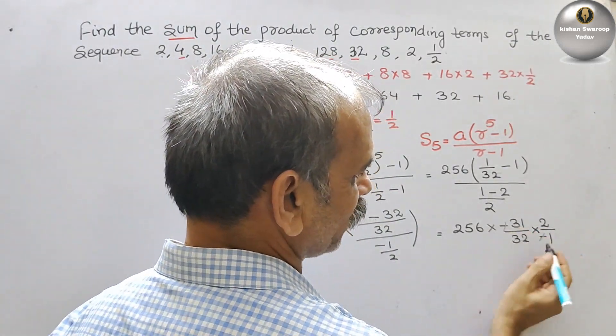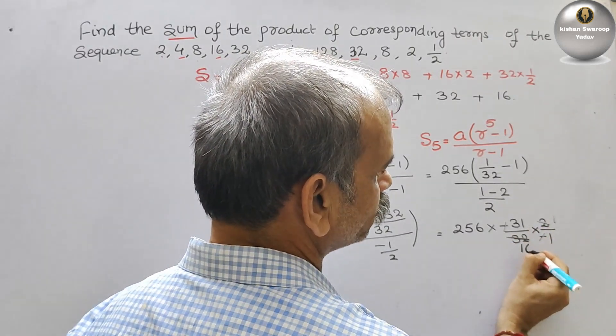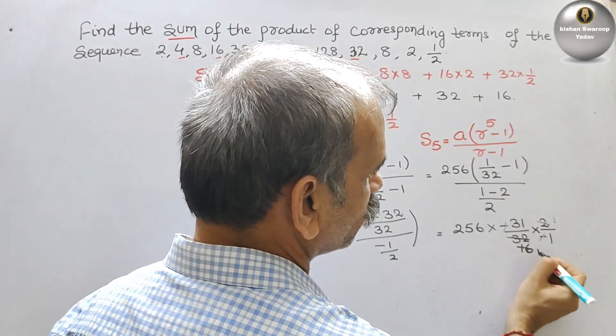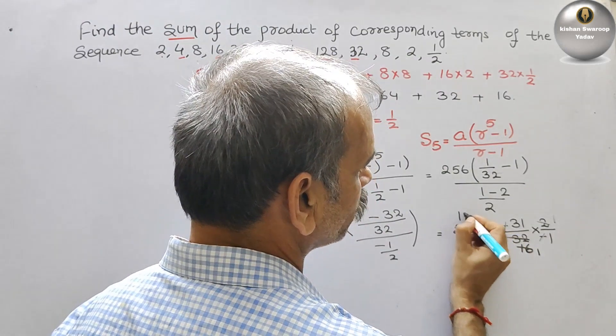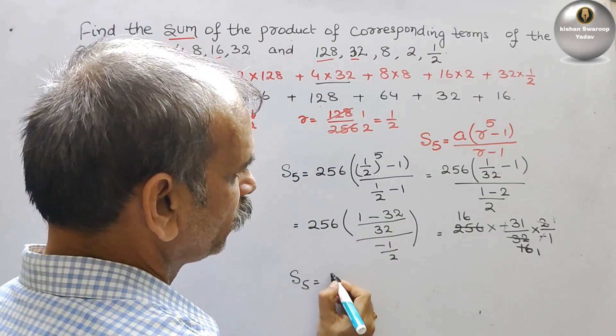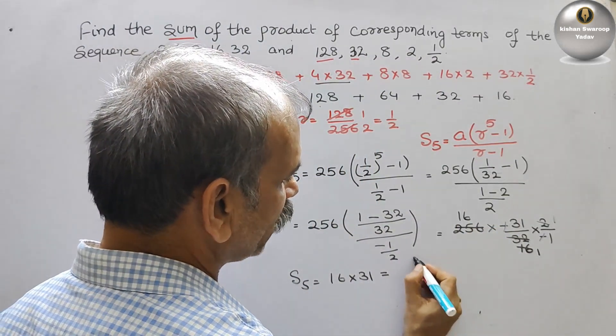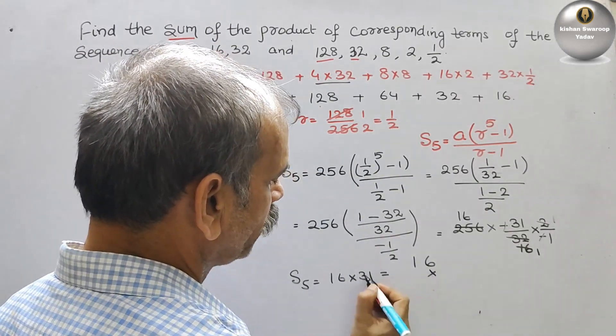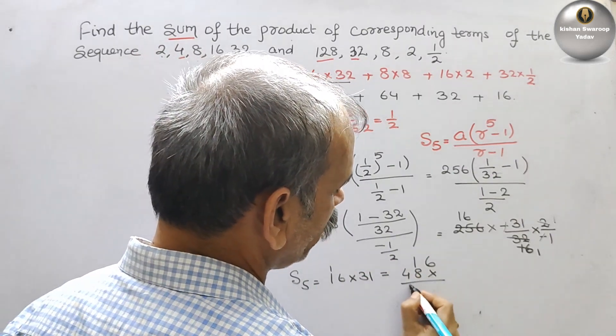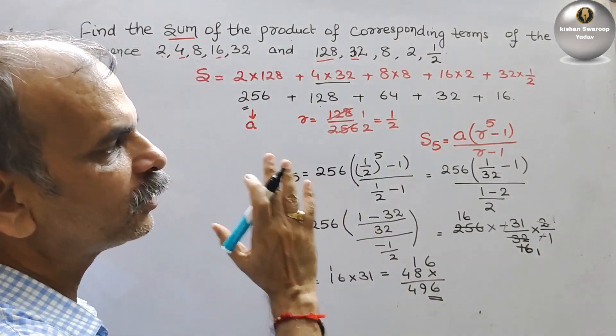Minus and minus cancel. 256 divided by 16 is 16. So we have to multiply: S5 = 16×31 = 496. So this is your answer for this question.